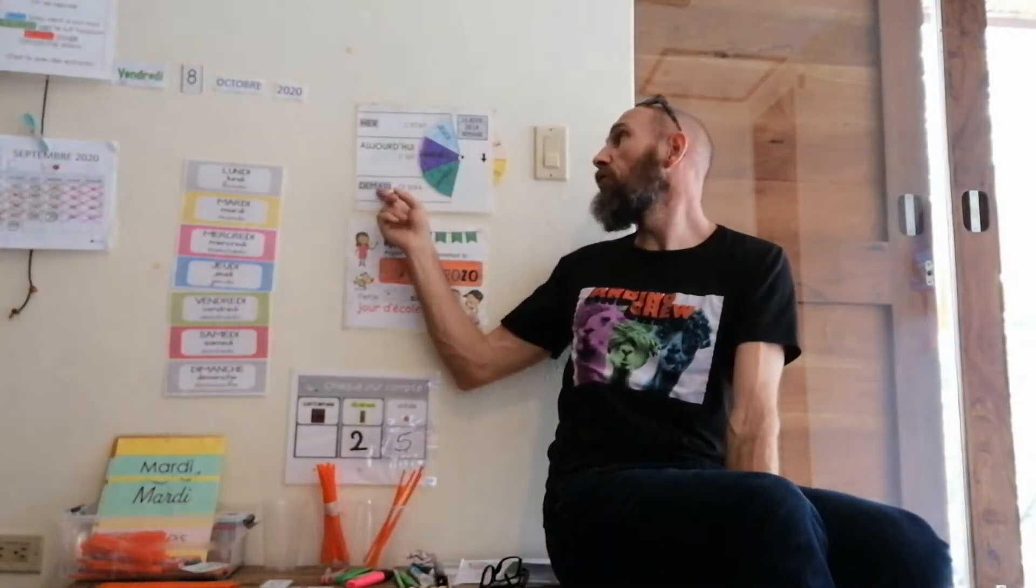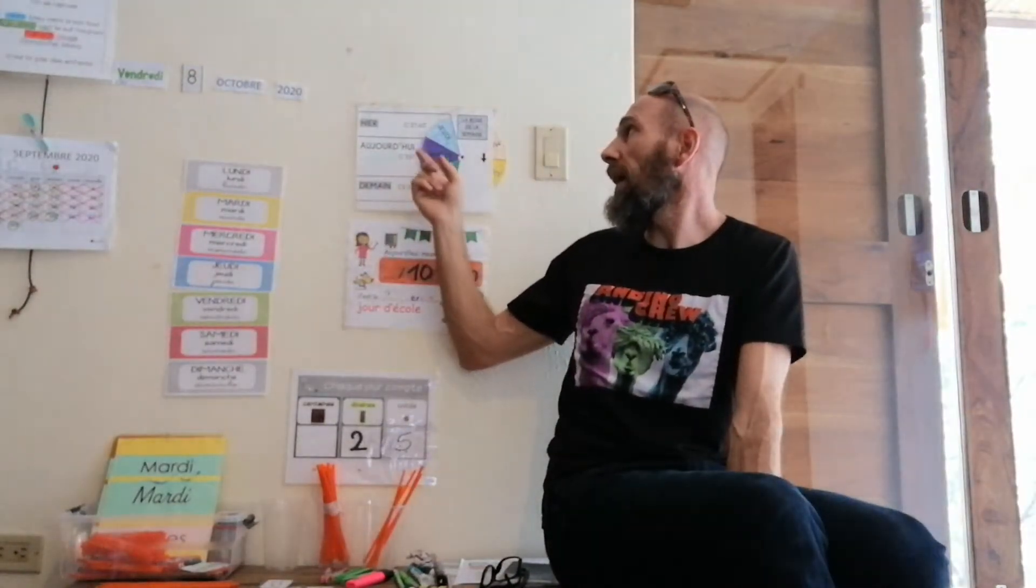Hier, hier, c'est terminé, c'est le passé, c'était jeudi. Et demain, demain, c'est le futur, ce n'est pas encore lieu. Ce sera demain, ce sera samedi. Nous sommes donc vendredi. Hier, la veille, jeudi. Demain, le lendemain, samedi. Et nous sommes donc aujourd'hui vendredi.